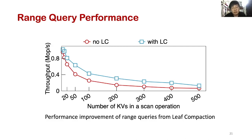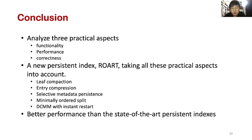In conclusion, three practical aspects are important: functionality, performance, and correctness. Our ART takes all these practical aspects into account with several optimizations, such as leaf compaction, entry compression, selective metadata persistence, minimally ordered split, and DCMM with instant restart. Our ART can achieve better performance than state-of-the-art persistent indexes. Thank you for listening.